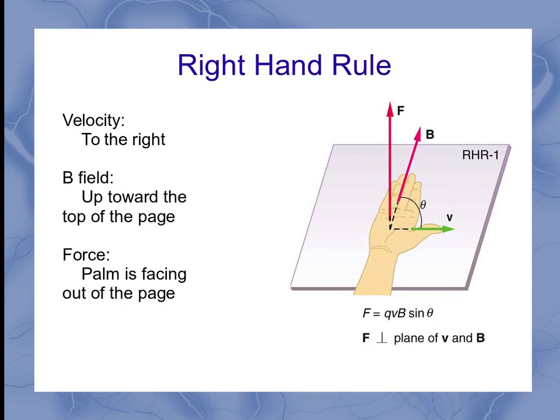Now here's a cartoon example. In this particular example, they're showing the velocity aligned with your thumb to the right. The magnetic field is with your fingers pointed up towards the top of your page. And then in that case, the palm is out of the page.